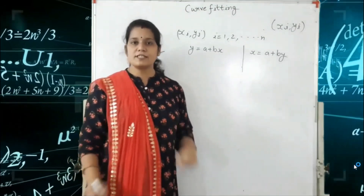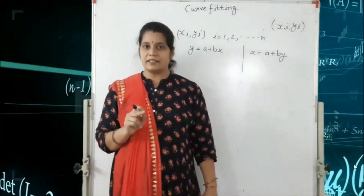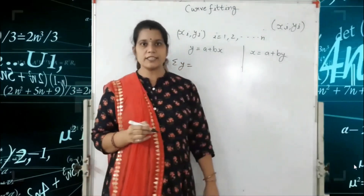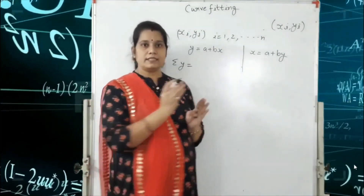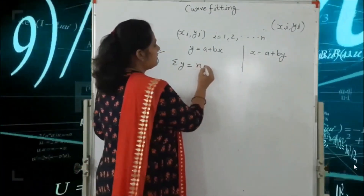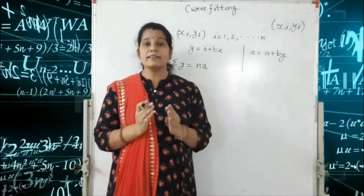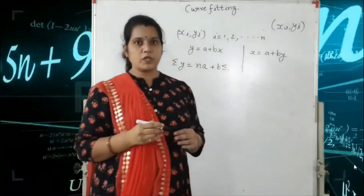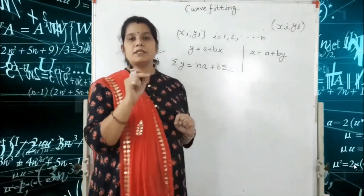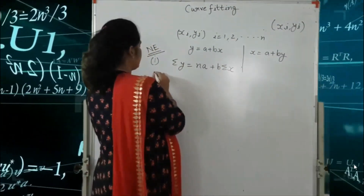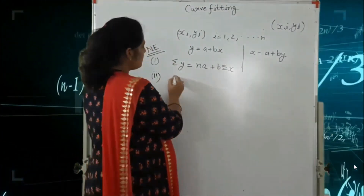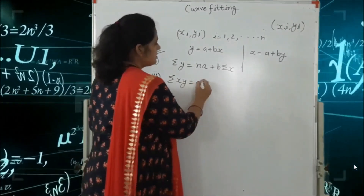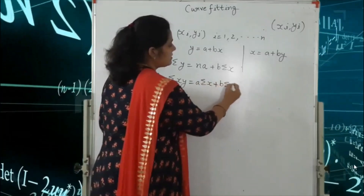The first normal equation is: summation Y is equal to nA plus B summation X, where n is the number of terms. The second normal equation is: summation XY is equal to A summation X plus B summation X square. So we have two normal equations.